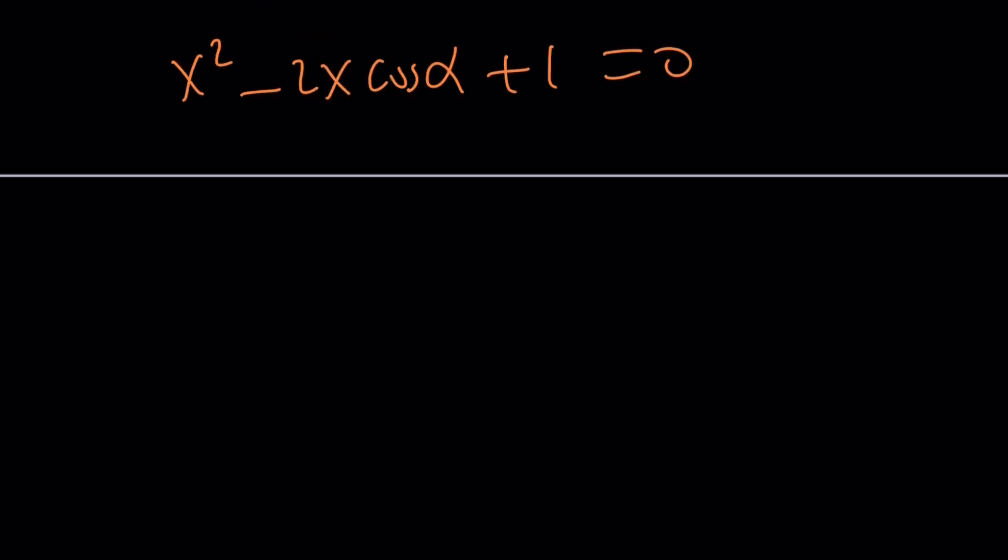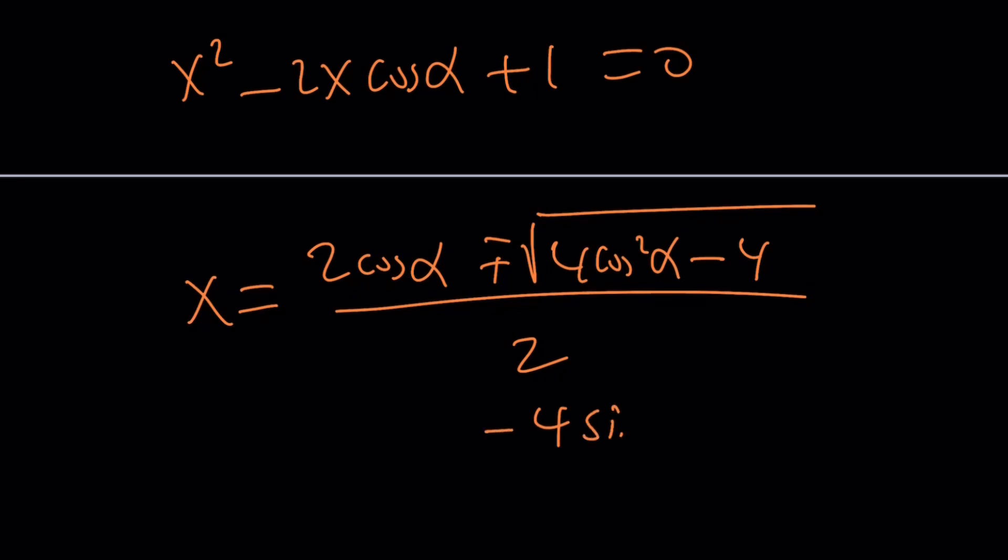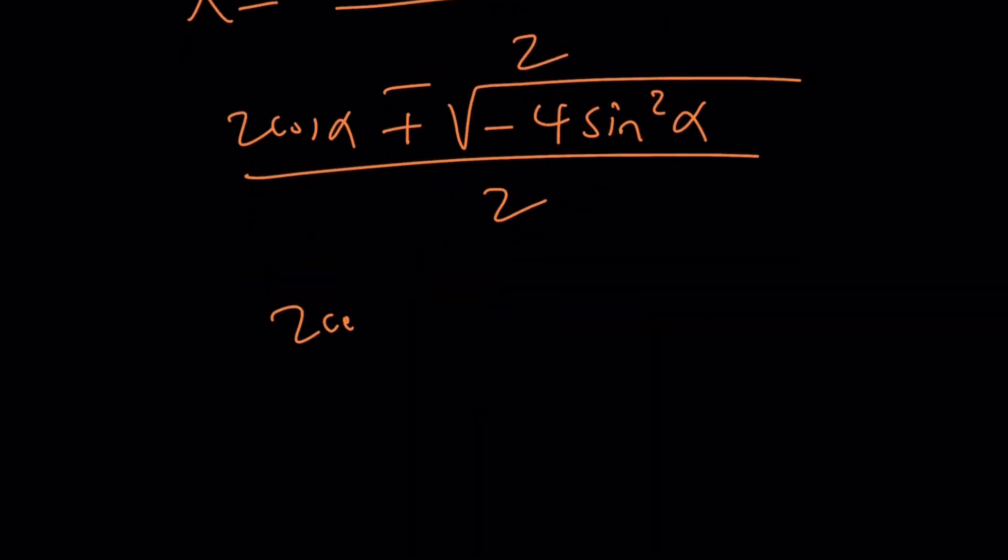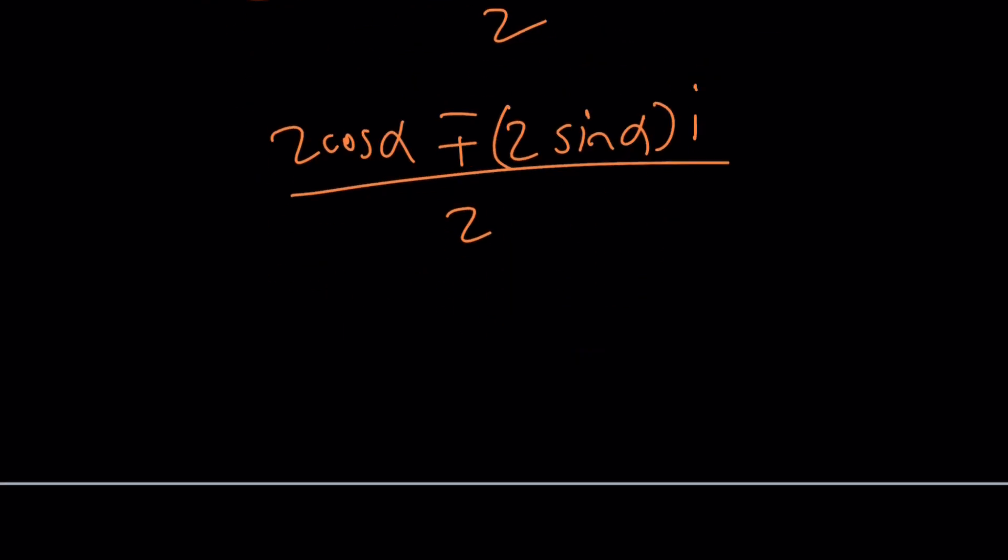x squared plus 1 is equal to 2x cosine alpha. And then I can bring everything to the same side, and then I can solve this with the quadratic formula. And from here, I'm going to get x equals negative b, which is 2 cosine alpha, plus minus the square root of b squared, which is going to be 4 cosine squared alpha minus 4ac, which is going to be 4. 4 times cosine squared minus 1 becomes negative 4 sine squared under the radical. And then you get something that is complex from here. 2 cosine alpha plus minus 2 sine alpha multiplied by i. And when you divide by 2, you get cosine alpha plus minus i sine alpha. And then you can use the same formula.